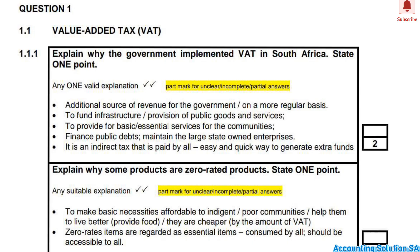For question 1.1.2 — explain why some products are zero-rated — the answer is: to make basic necessities affordable. Some people are poor and cannot afford expensive goods. For example, maize meal is something we need each and every day, which means it must be zero-rated.